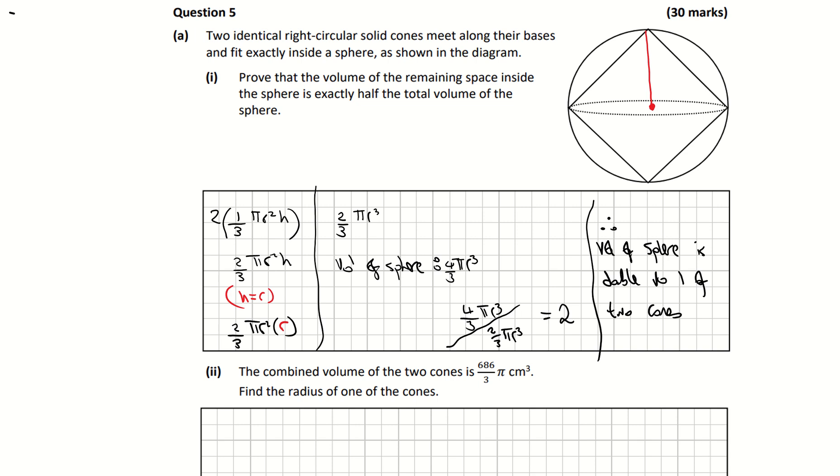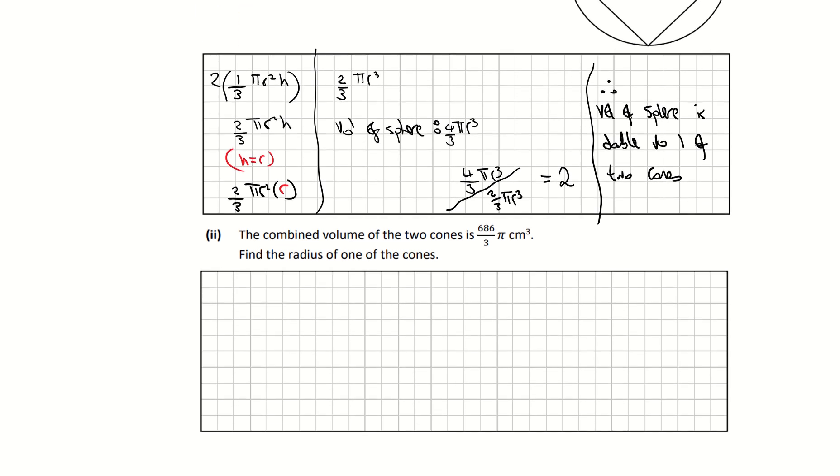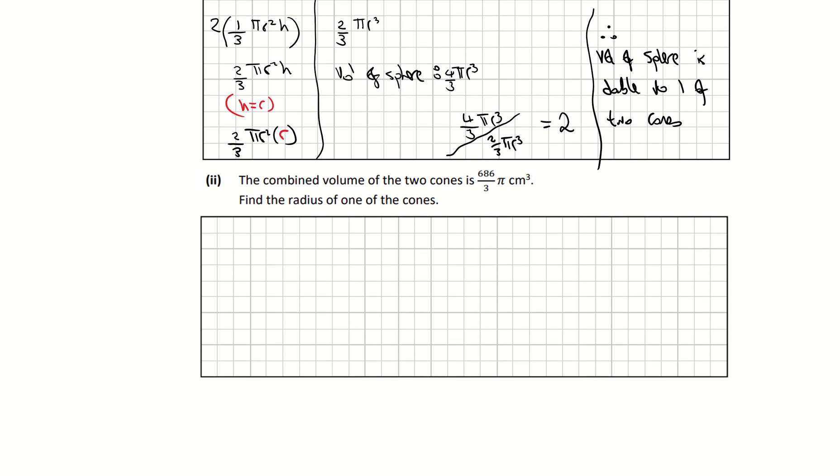Part 2, it's telling us that the combined volume of the 2 cones is 686 over 3 pi centimeters cubed. Find the radius of 1 of the cones. So the volume of 2 cones is 2 multiplied by 1 over 3 pi r squared h. Similar to part 1, I'm going to let that equal to my volume. So when I multiply in that 2, I get 2 over 3 pi r squared h is equal to volume, which is 686 over 3 pi.